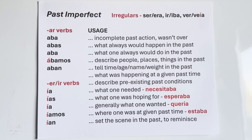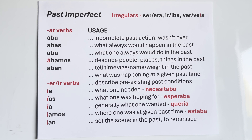Weight in the past is also imperfect. I weighed myself this morning — that's preterite, it's over: esta mañana me pesé. But at the instant you stood on the scale and it registered your weight: pesaba mucho — and I weighed a lot. You weighed that weight before and after you stepped on the scale, so pesaba is an incomplete past action.